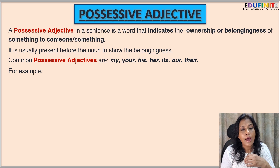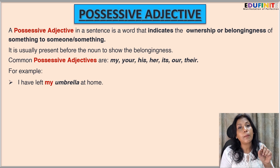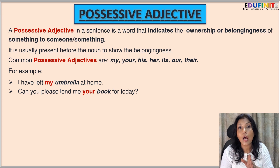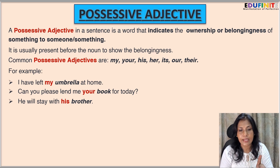'I left my umbrella at home.' Here 'my' is accompanied by the noun 'umbrella,' so 'my' is the possessive adjective. 'Can you please lend me your book for today?' — 'your' is the possessive adjective because it is followed by the noun 'book,' indicating whose ownership is for the book. 'He will stay with his brother.' Here 'his' is the possessive adjective indicating whose brother — his brother belongs to him.